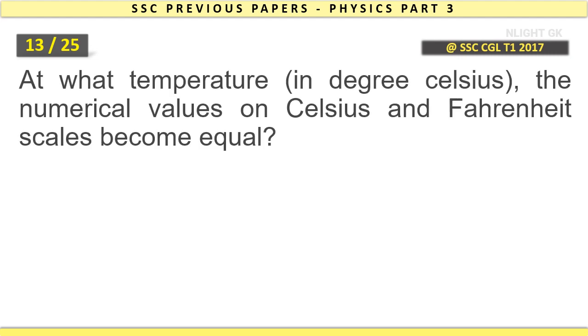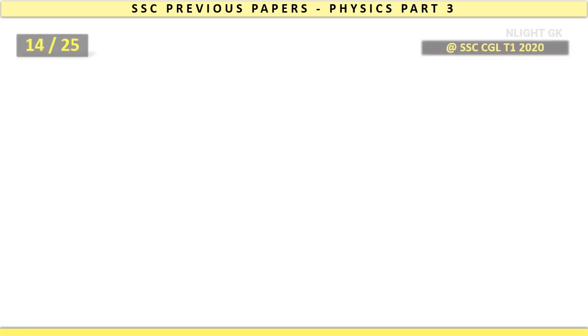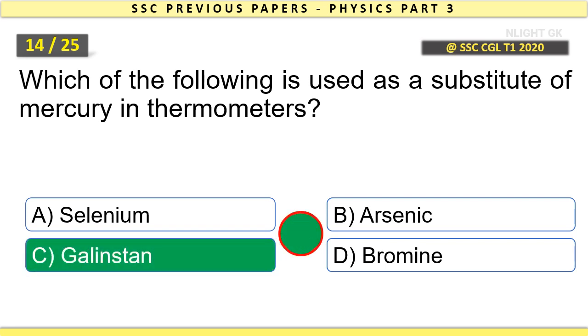At what temperature in degree Celsius do the numerical values on Celsius and Fahrenheit scales become equal? Minus 40. Which of the following is used as a substitute of mercury in thermometers? Galinstan.